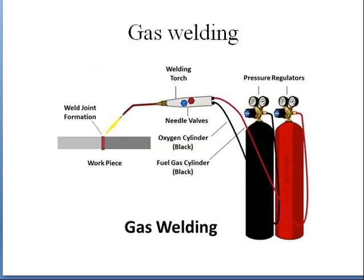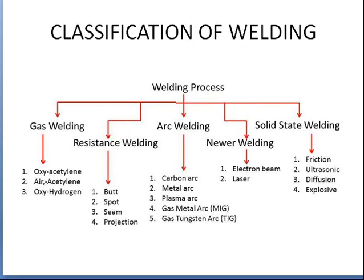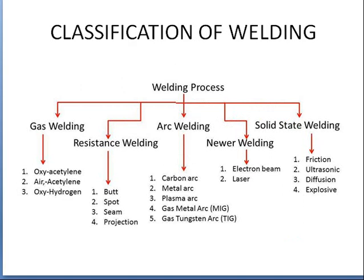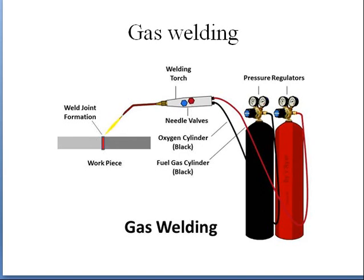Now let us look at gas welding. Gas welding is of different types — oxy-acetylene, air-acetylene, and oxy-hydrogen. Although the cylinders and working temperatures vary, the principle of working is the same. You have two cylinders with pressure-regulating valves and controlling valves to manage the volume of oxygen and acetylene, along with pressure regulators to check the gas pressure inside. The flame produced in gas welding is of three types.